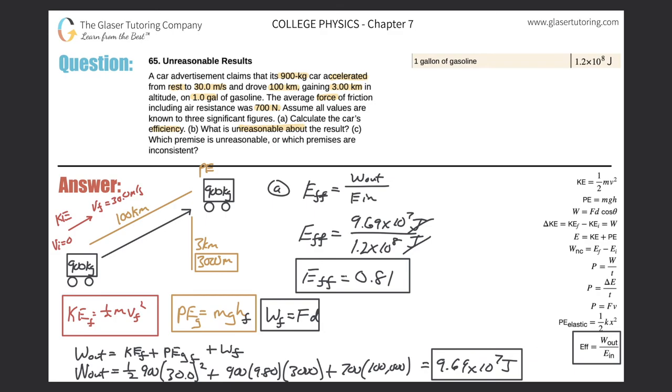Letter B, what is unreasonable about the result? Well, you'd have to know a little bit about gasoline efficiency to know why this is unreasonable. It's just a very high efficiency. Most engines do not even operate close to that level of efficiency.